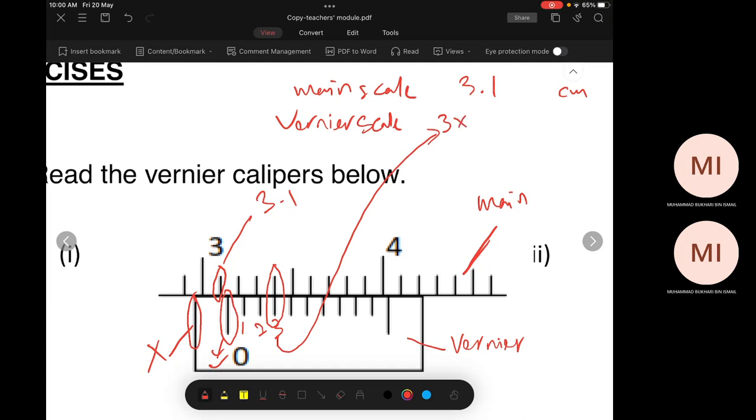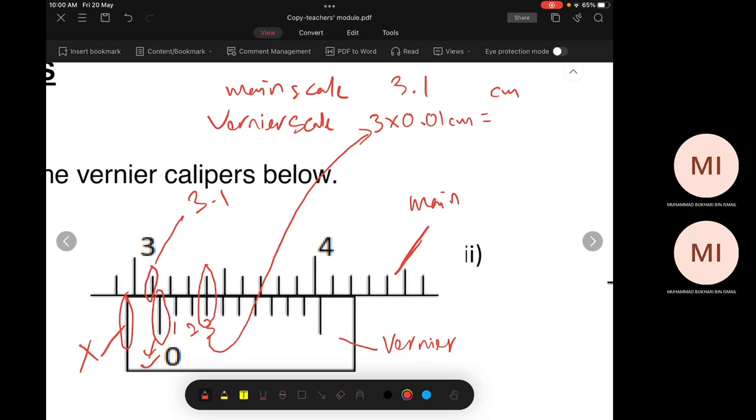Multiply by the sensitivity of vernier scale. You can see it here. 0.01 centimeter, the sensitivity. 0.01 centimeter equals what? Equals 0.03, right? Is it true?